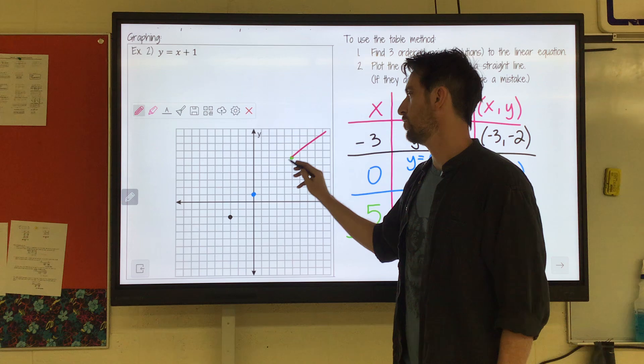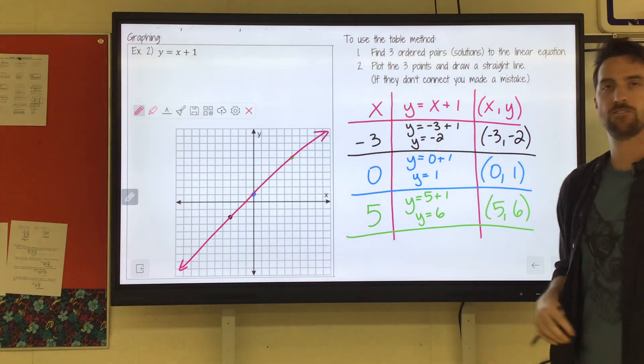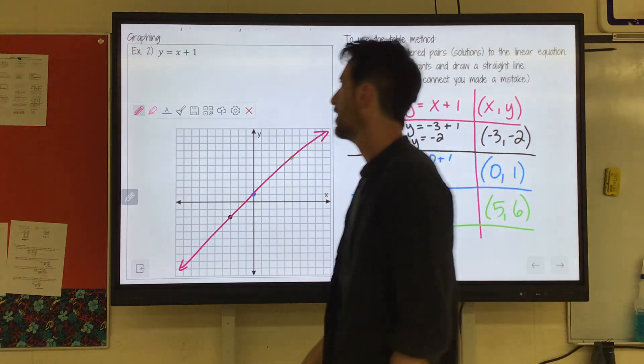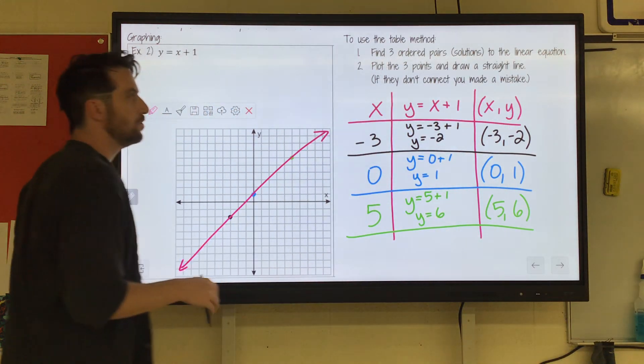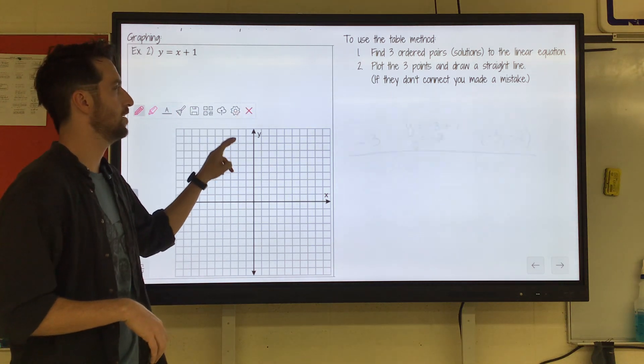You can use a ruler. You can use the edge of a book. Calculator case. All that stuff. Make a nice straight line. Cool. That is one method that you can graph it, and that's how we're going to graph them today. So let's try another one.